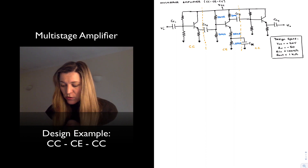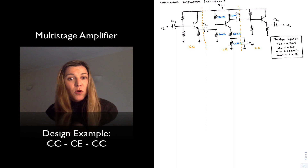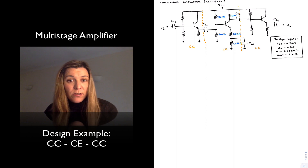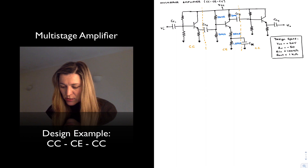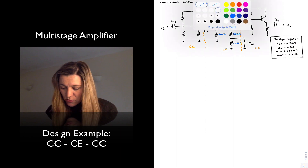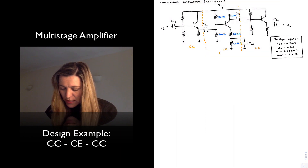Now we're going to design the common collector stages — the input stage and output stage — to get those input and output resistance characteristics. So far this is a common emitter stage with a gain of 50.